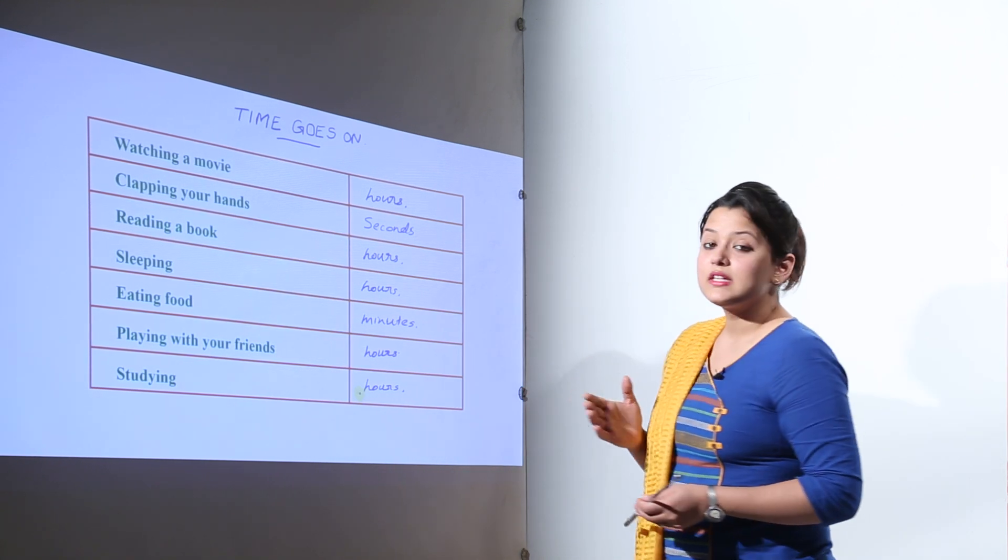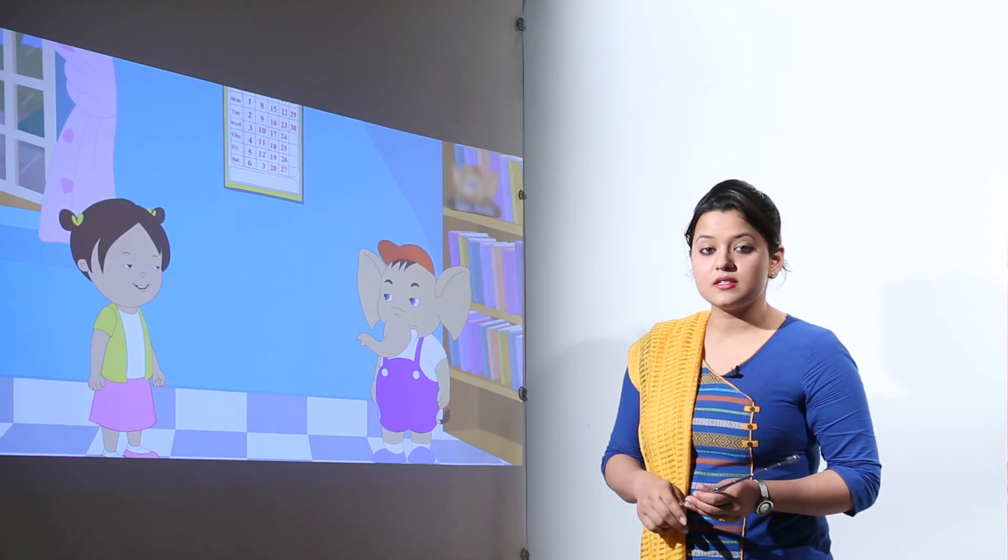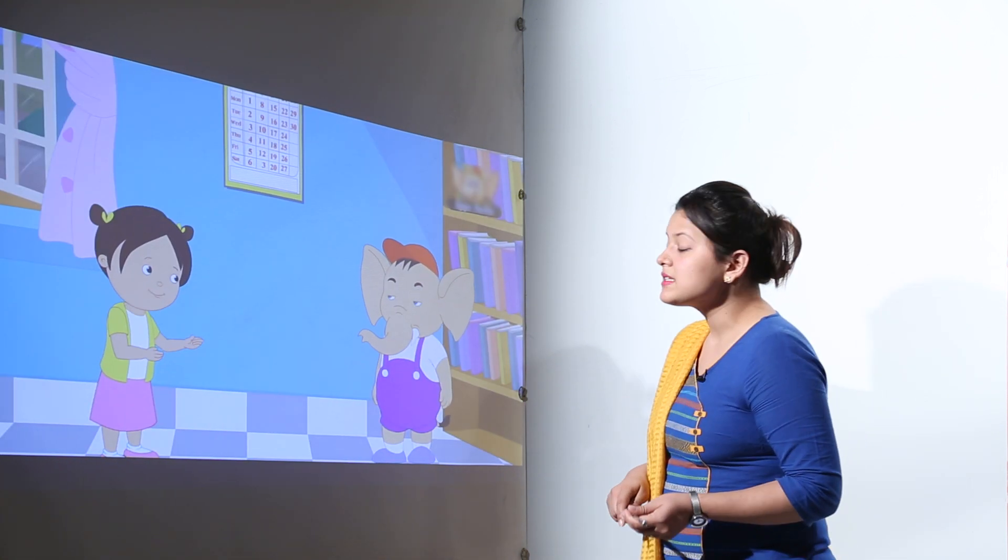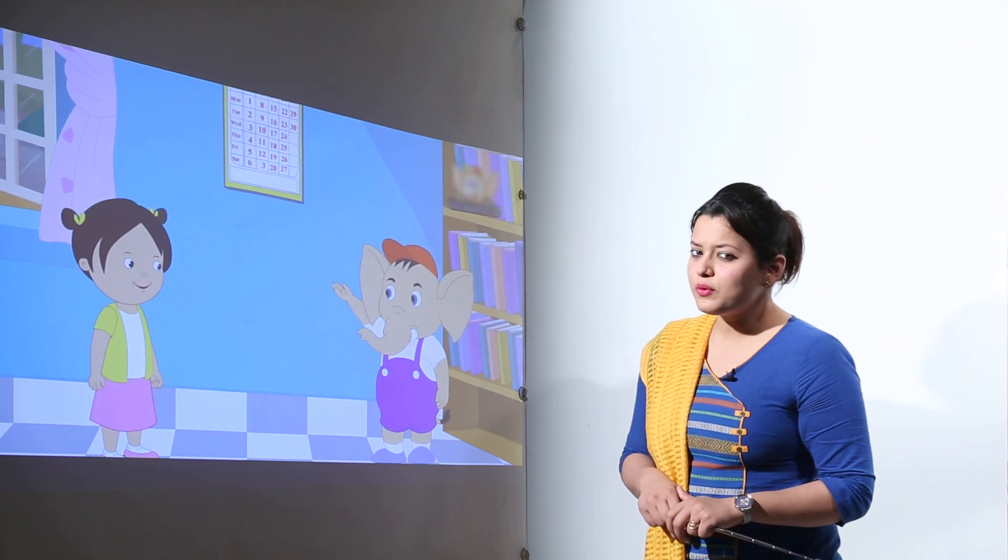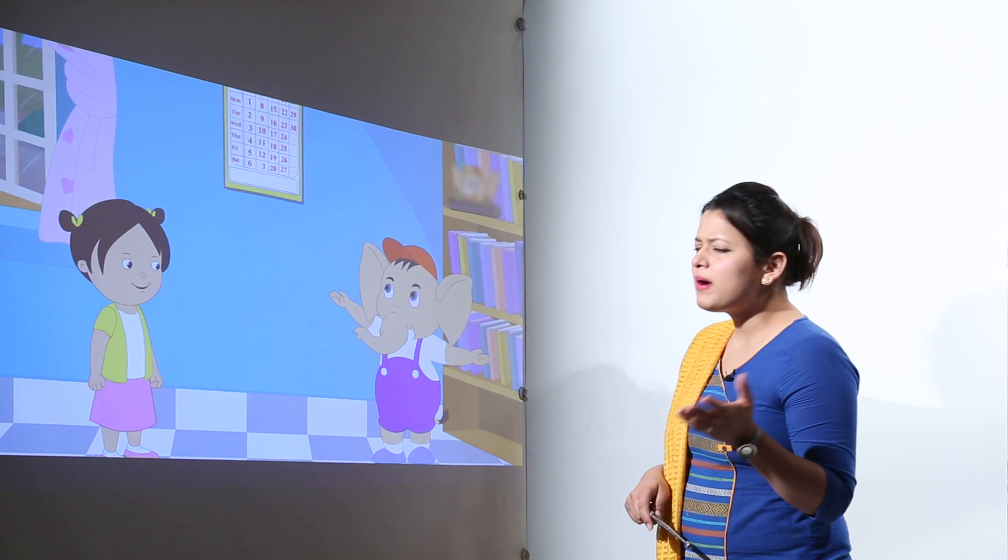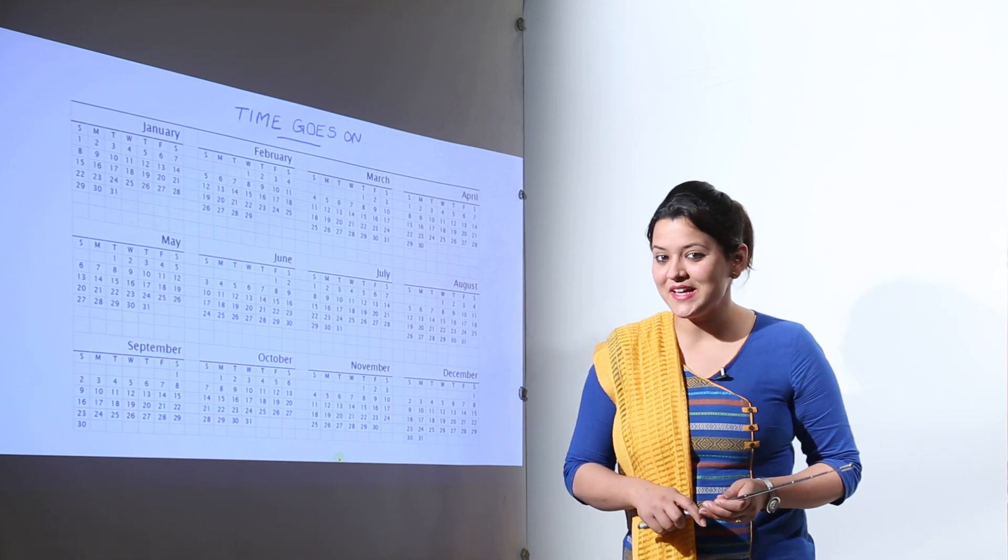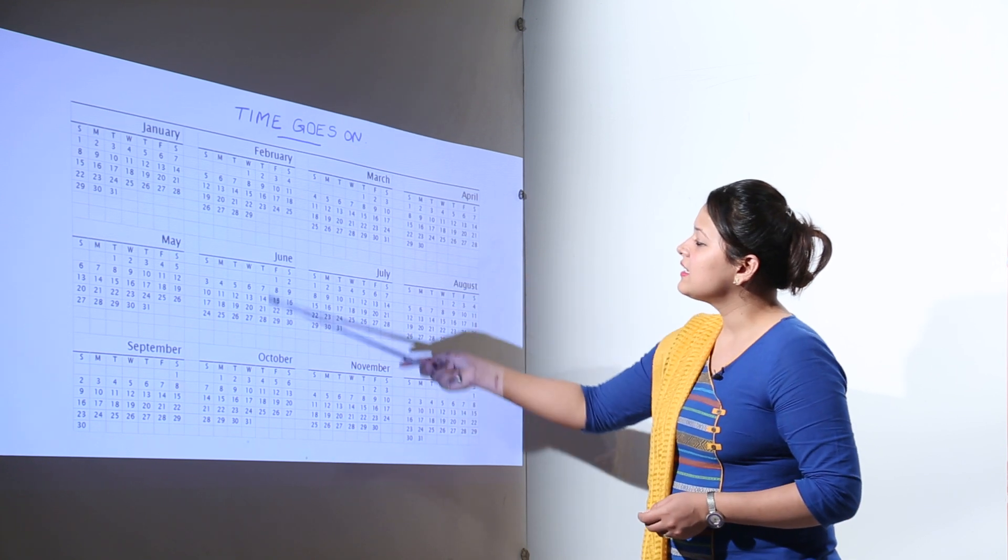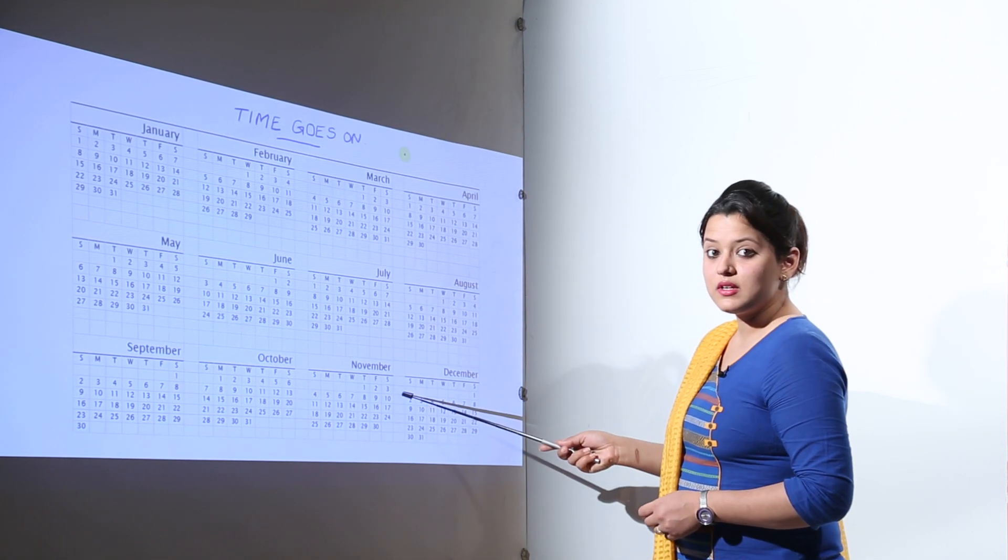Now this was about the time that is the seconds, minutes and hours. Now we are going to discuss about weeks, days, months and years. Are you familiar with them? You might or might not be, but you must be knowing about the calendar, right? So what is a calendar? Calendar is like this. It has 12 months in total.